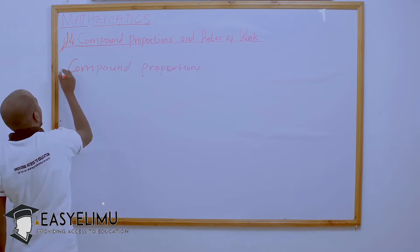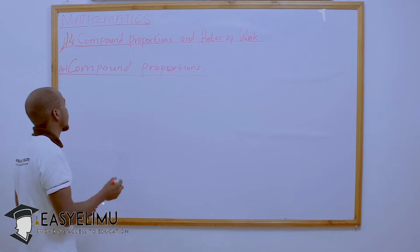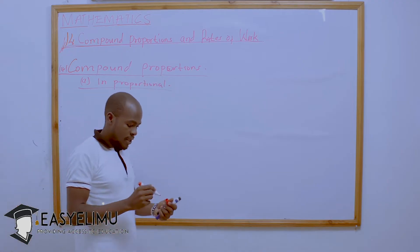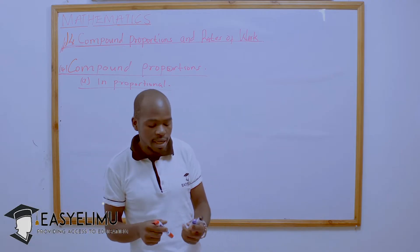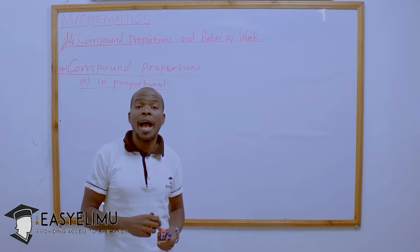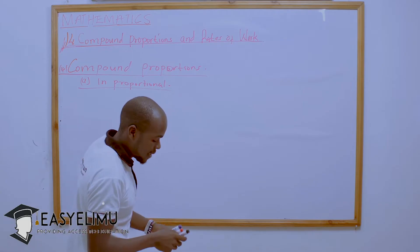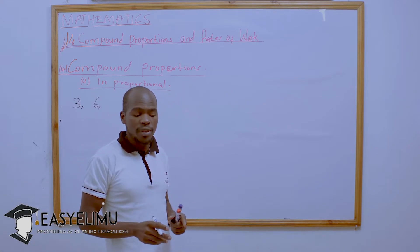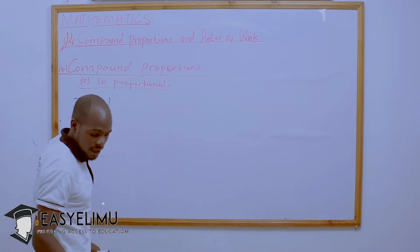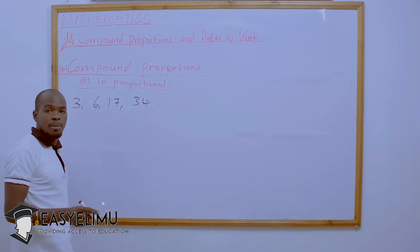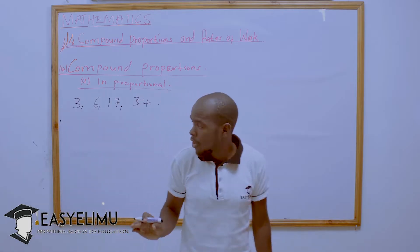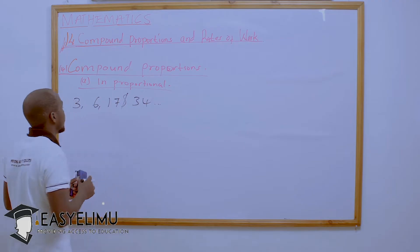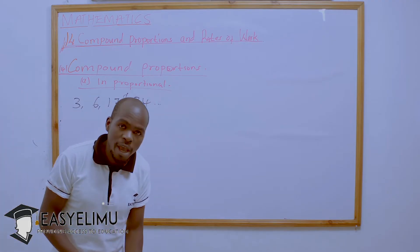We shall start with Common Proportions, section 14.1, beginning with in-proportion. When you are told that some items are in proportion, it means that if you take those terms and do as I will show you, they shall give a result, as we shall see. For example, if you have numbers like 3, 6, 17, and 34.